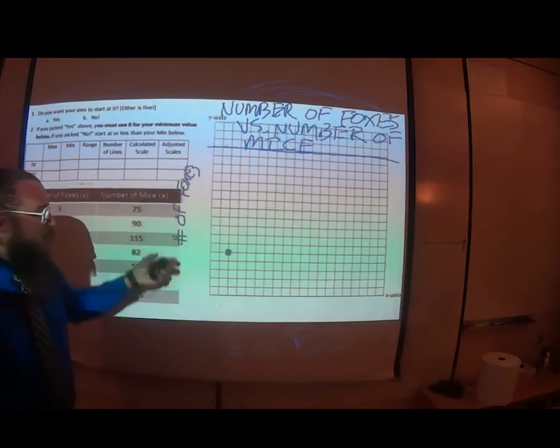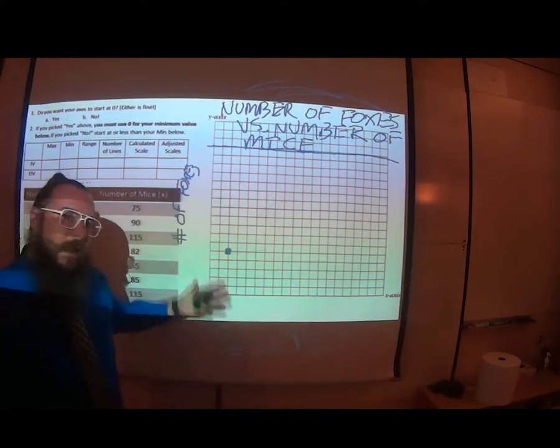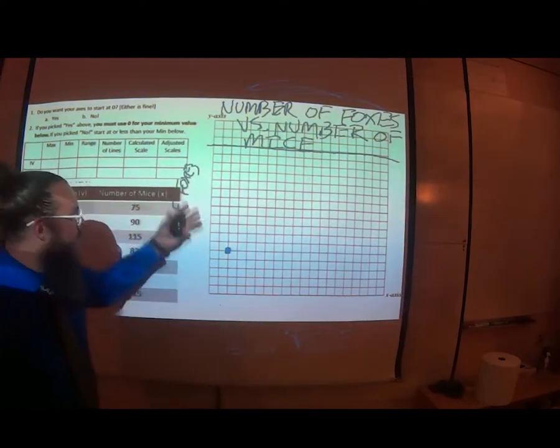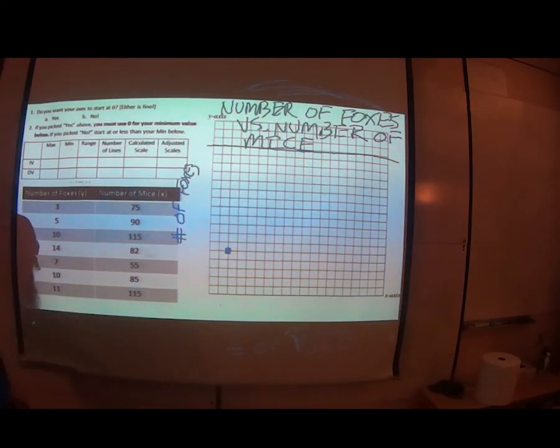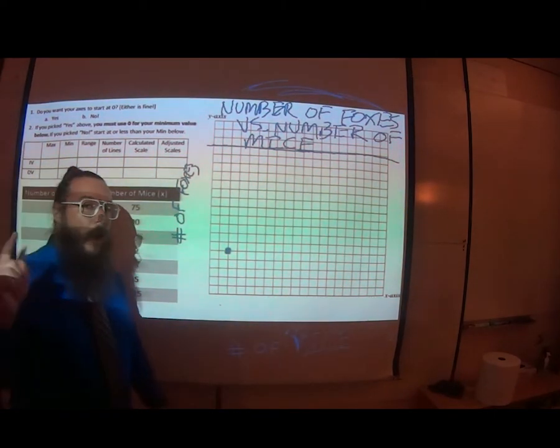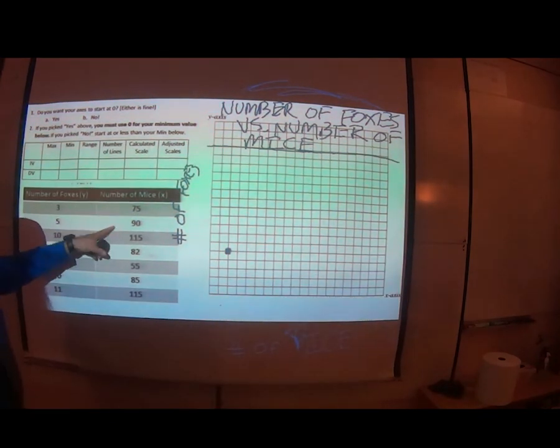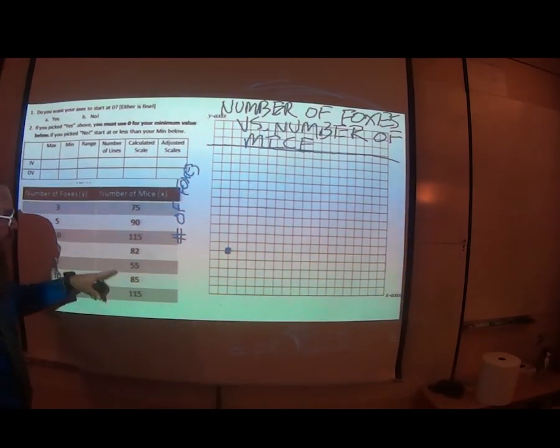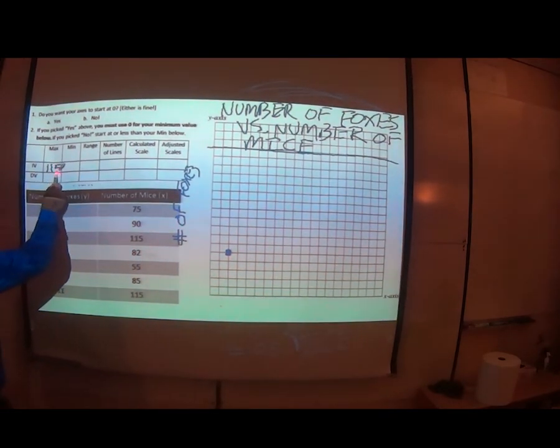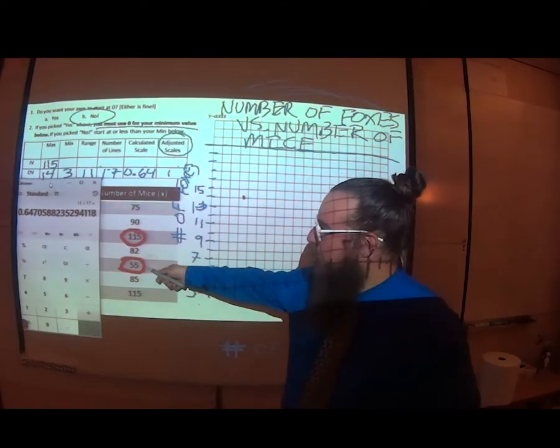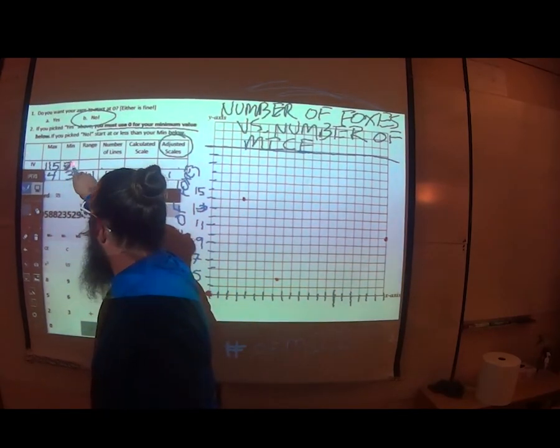For the independent variable, that's the one that always goes on the x-axis. In this case, the number of mice is what's affecting the number of foxes. The independent variable goes on the x-axis unless you are specifically told otherwise. We find our biggest number, which is 115. Then we find our smallest number, a mere 55.